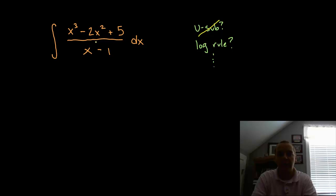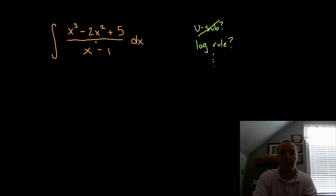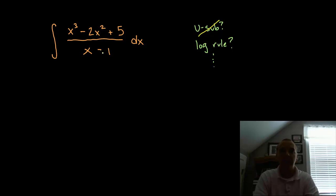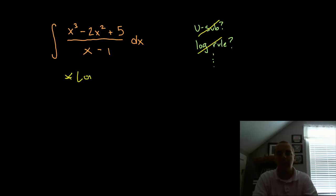Whenever we see fractions, one thing that immediately comes to mind is the log rule, where you have the derivative of the denominator over the denominator. But this one has a strange property: the numerator's degree is higher than the denominator's degree. That could never be the log rule, because the derivative of a linear expression will be a constant, not cubic. So whenever you have a polynomial of larger degree divided by a polynomial of smaller degree, the technique you'll have to use is called long division.